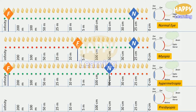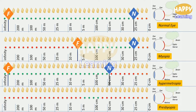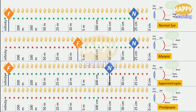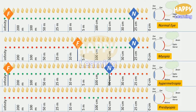Now let us take the example of presbyopia — an eye with a defect called presbyopia. The visible region for this eye is very limited. Only a few green buttons appear in the middle. Objects at shorter distances are not clearly visible, and objects at longer distances are also not clearly visible. Only objects at intermediate distances are visible. So its near point is more than 25 centimeters, maybe at a few meters, and its far point is not at infinity but also at a few meters.